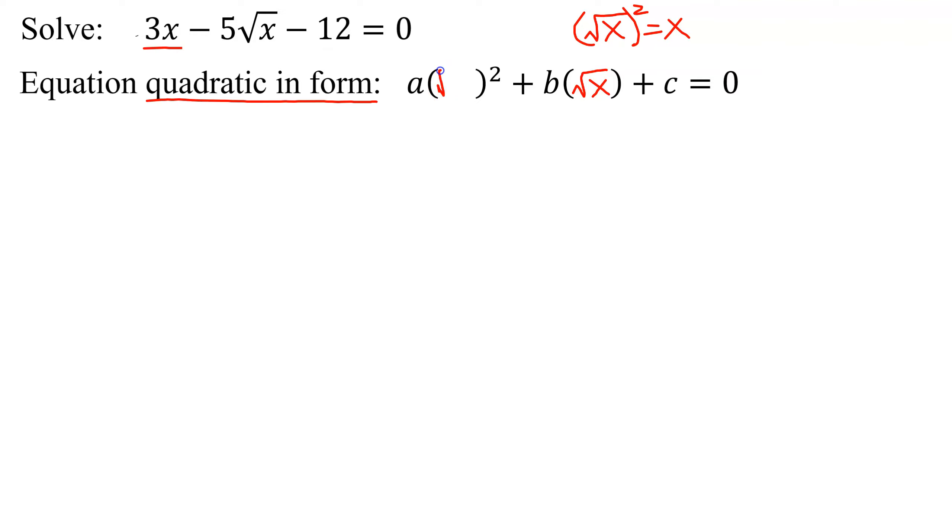So definitely this is quadratic in form where I have a times the square root of x all squared plus b times the square root of x plus c equals 0. The best way to solve these is by doing a u substitution.